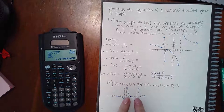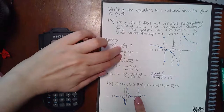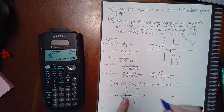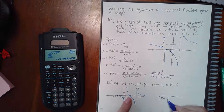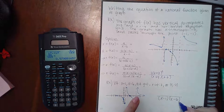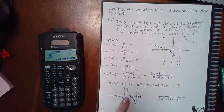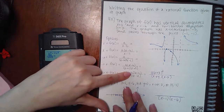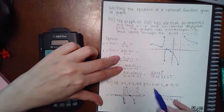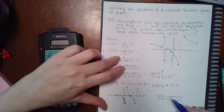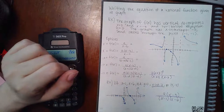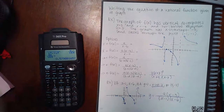For the second example: two vertical asymptotes again, so two denominator factors. The asymptotes are at x = 1 and x = 6, giving (x - 1)(x - 6) in the denominator. The horizontal asymptote is at y = 0, so it's not the equal-degree case. There is one x-intercept at x = 3, giving (x - 3) in the numerator. The equation is y = a(x - 3) / [(x - 1)(x - 6)].